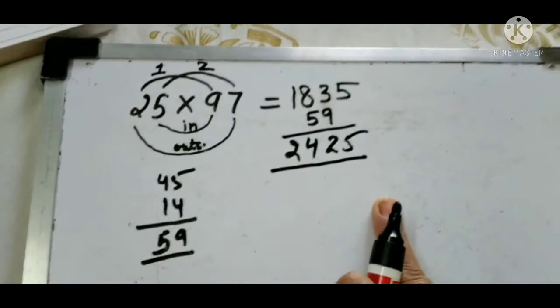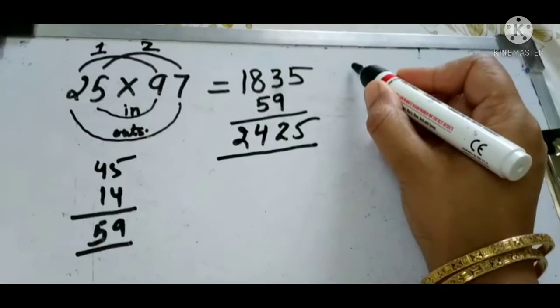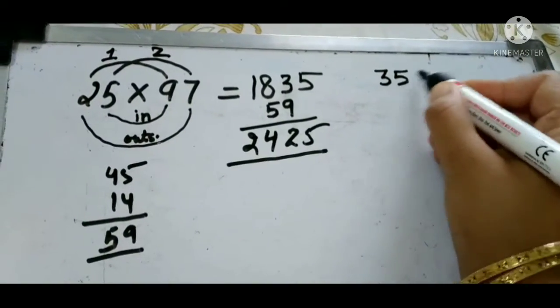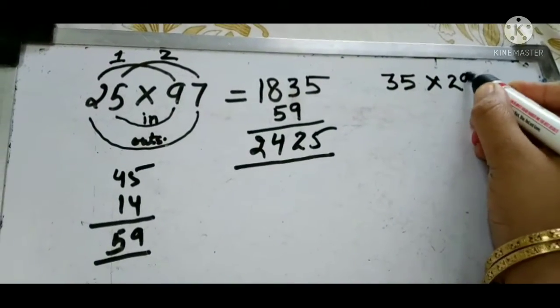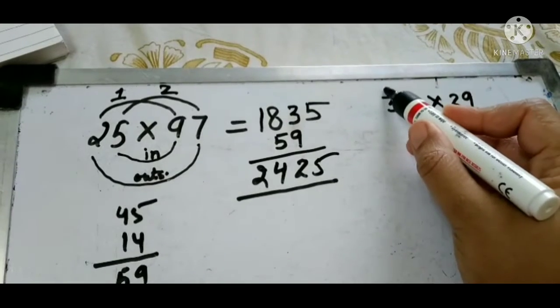Understood? This is your answer. One more time I will show you one more example. Suppose you are taking 35 multiply by 29. What we do first: we take the first number.